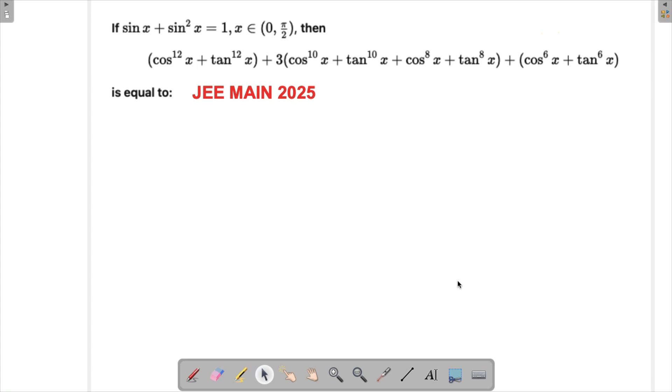Alright, so let's solve a problem which appeared in JEE Main 2025. In this question we have been given sin x plus sin square x equals to 1, where x belongs to 0 to pi by 2, and then we have to evaluate this expression.